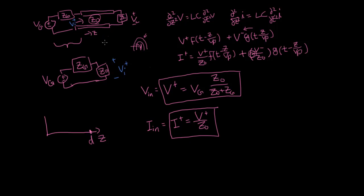So let's just say that this length over here is D. Then at T equals zero, you're going to have this V plus going in. And then as time goes on, it's going to continue to go this way.